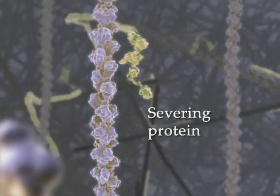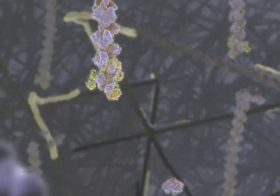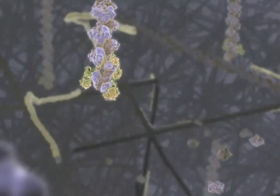Severing proteins induce kinks in the filament and lead to the formation of short fragments that rapidly depolymerize, or give rise to new filaments.